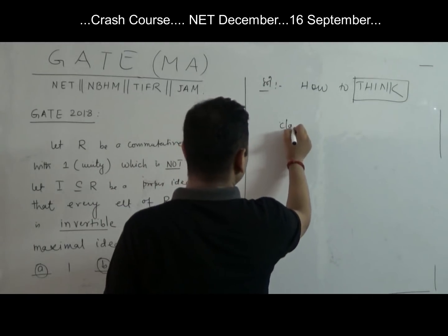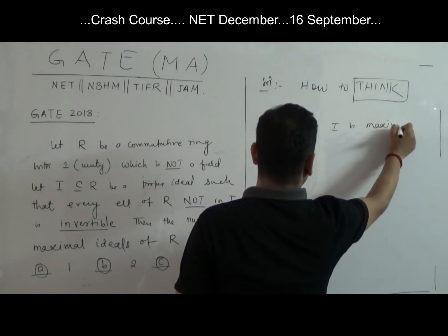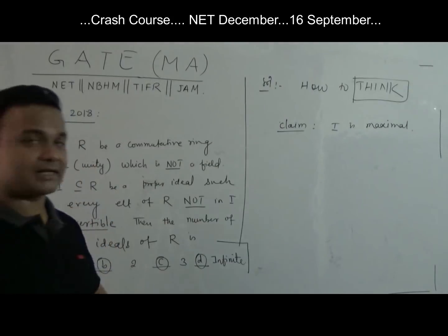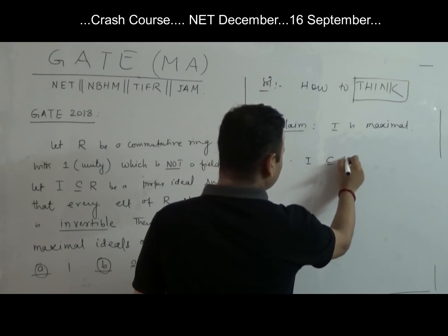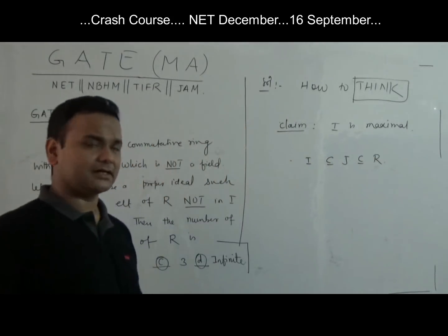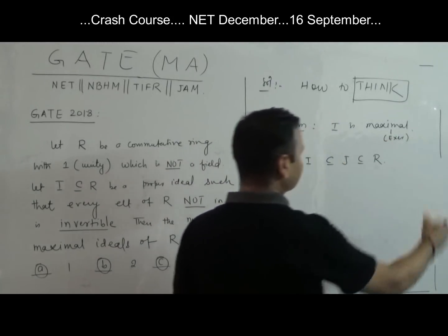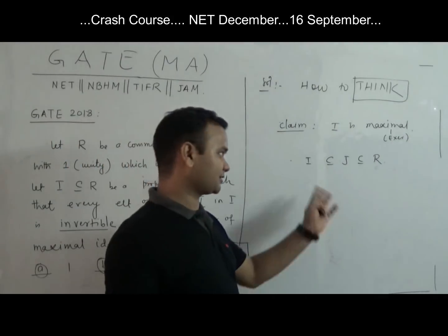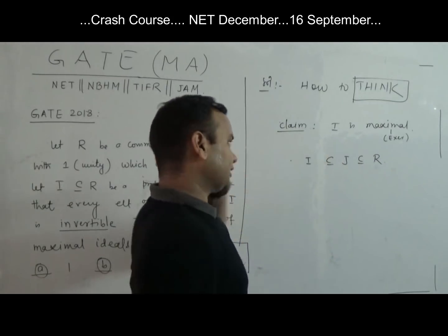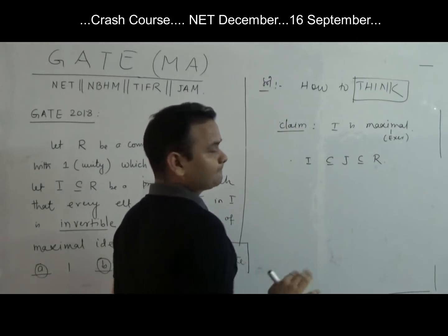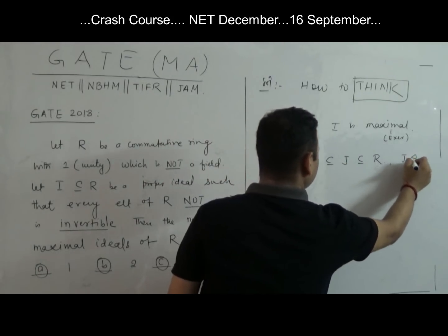My first claim is that I is maximal. Why is I maximal? By definition, a proper ideal I is maximal if whenever I is contained in J and J is an ideal of R, then either I equals J or J equals R.